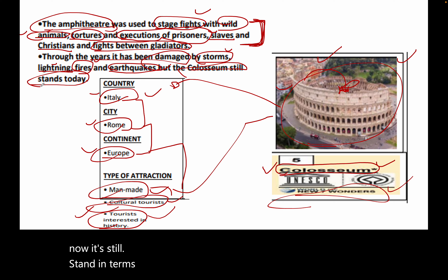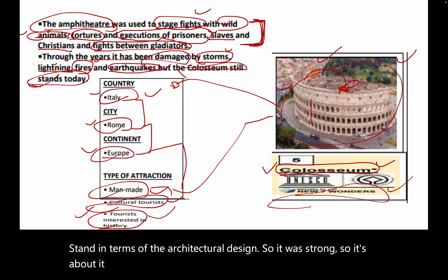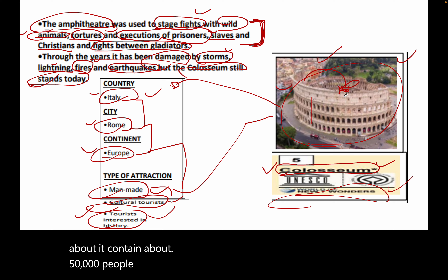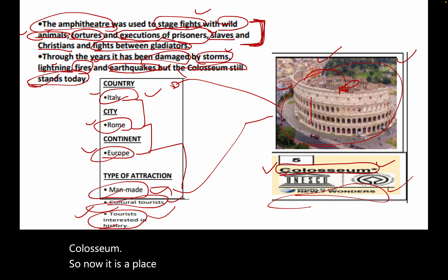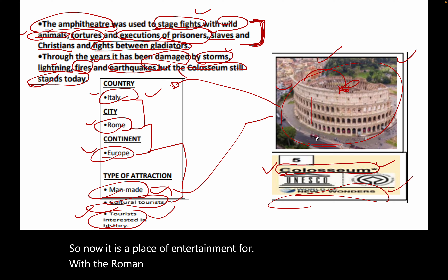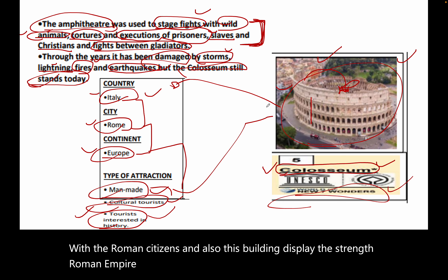The Colosseum can hold about 50,000 people. Today it is a place of entertainment for Roman citizens, and this building also displays the strength of the Roman Empire. It is important to understand its significance.